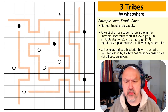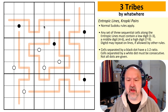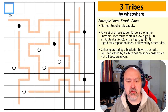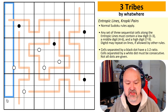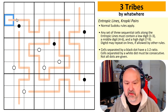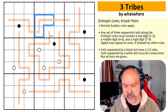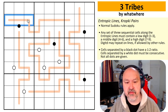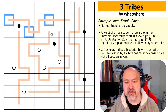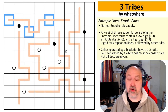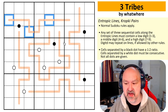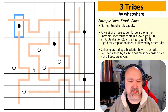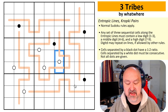Three Tribes by Watware. I'm not sure why it's called three tribes — there's a board game I used to play called five tribes, but I don't know what three tribes is supposed to mean. So what do we have? We have normal Sudoku rules: in every box, every row and every column the digits one to nine must be placed without repetition. We then have the entropic lines. Each set of three consecutive digits along an entropic line must contain a low digit (one to three), a middle digit (four to six) and a high digit (seven to nine). We've also got kropki pairs: cells separated by a black dot will be in a one-to-two relationship (one will be double the other), and cells separated by a white dot will be consecutive. Not all dots are given. With that, this should be solvable.